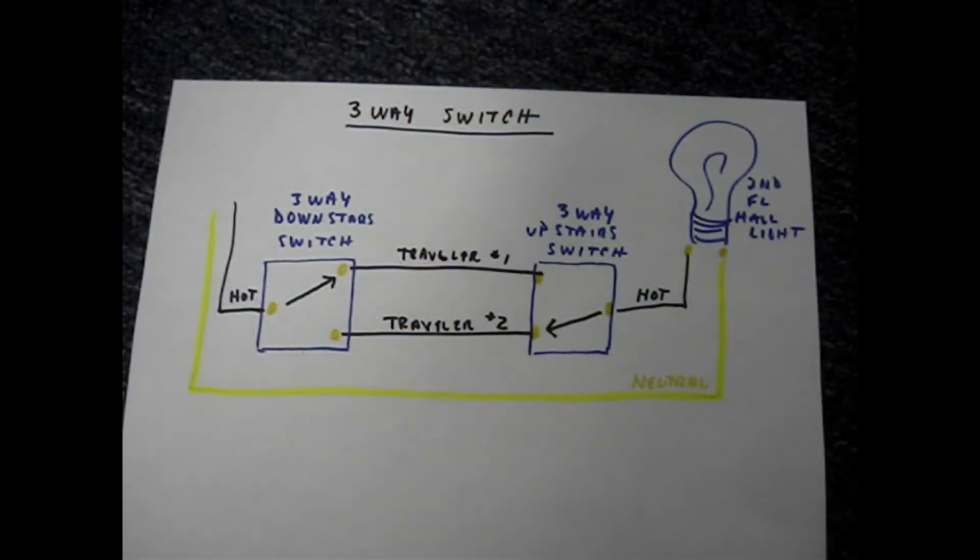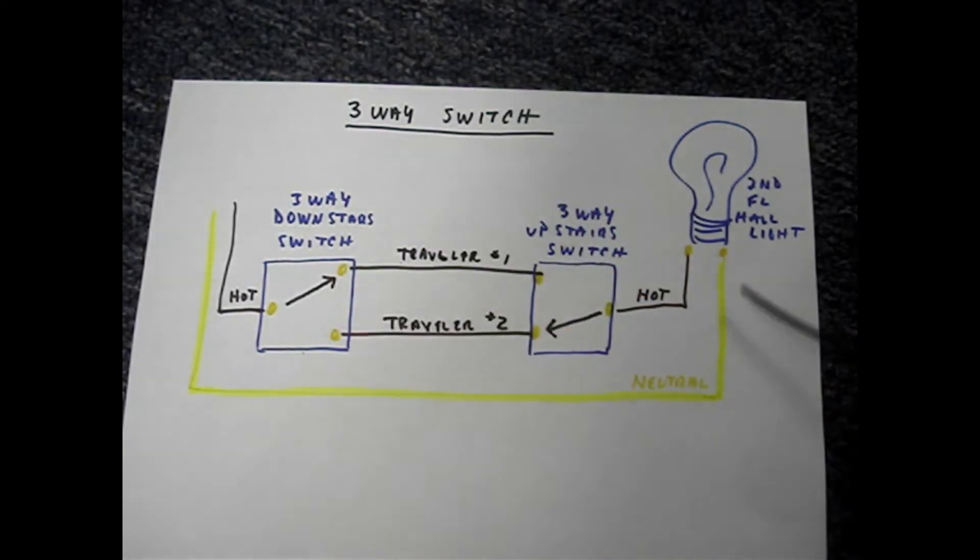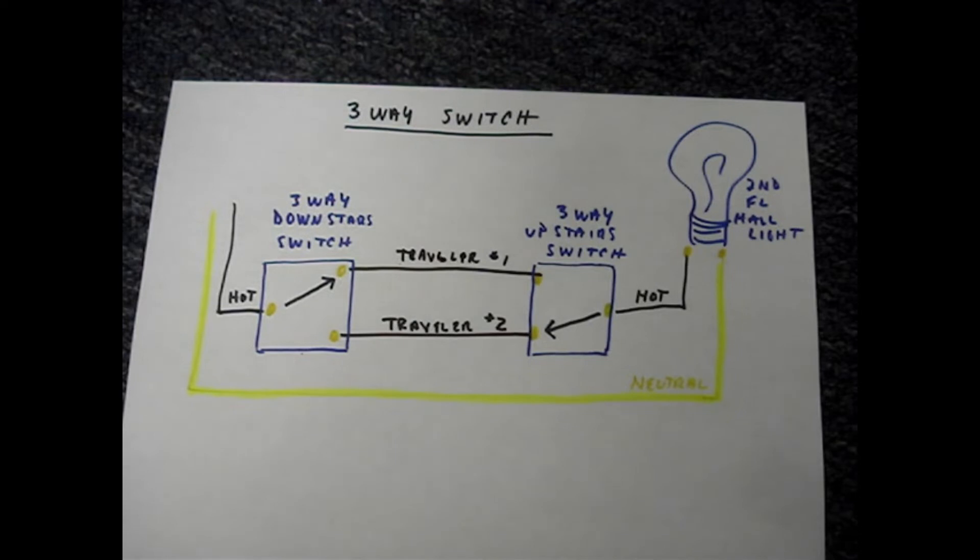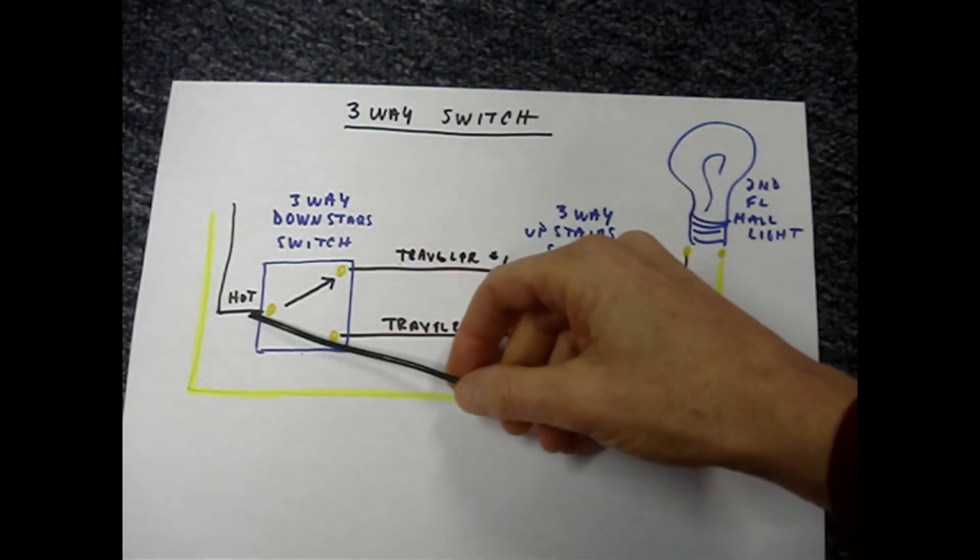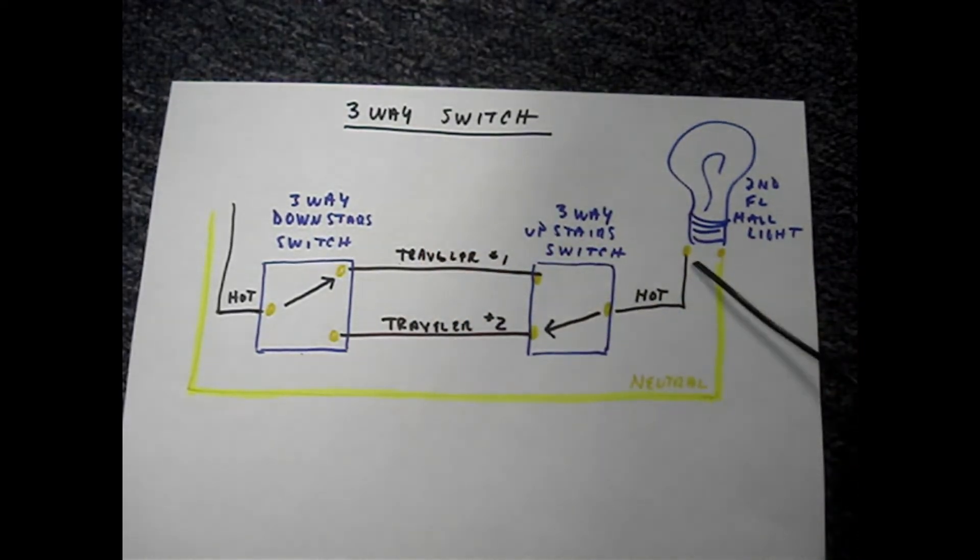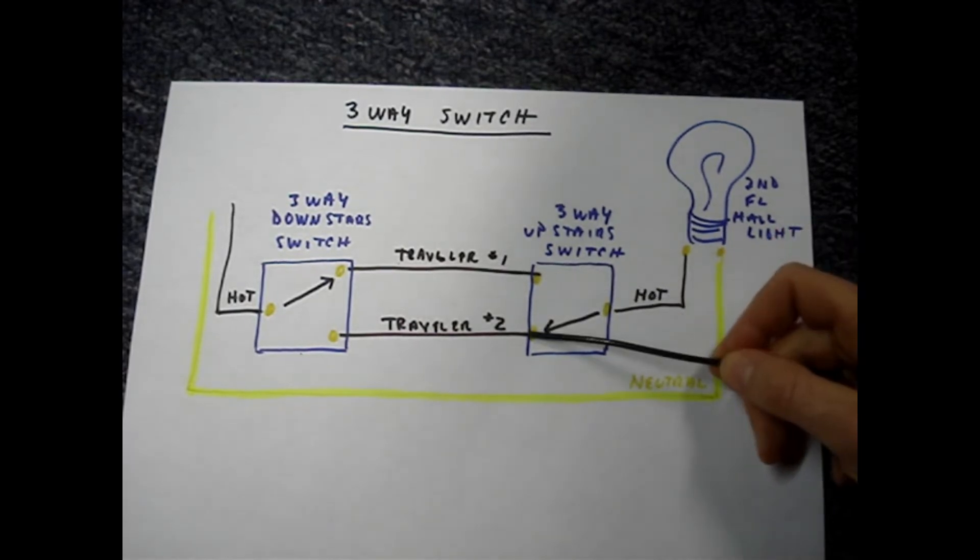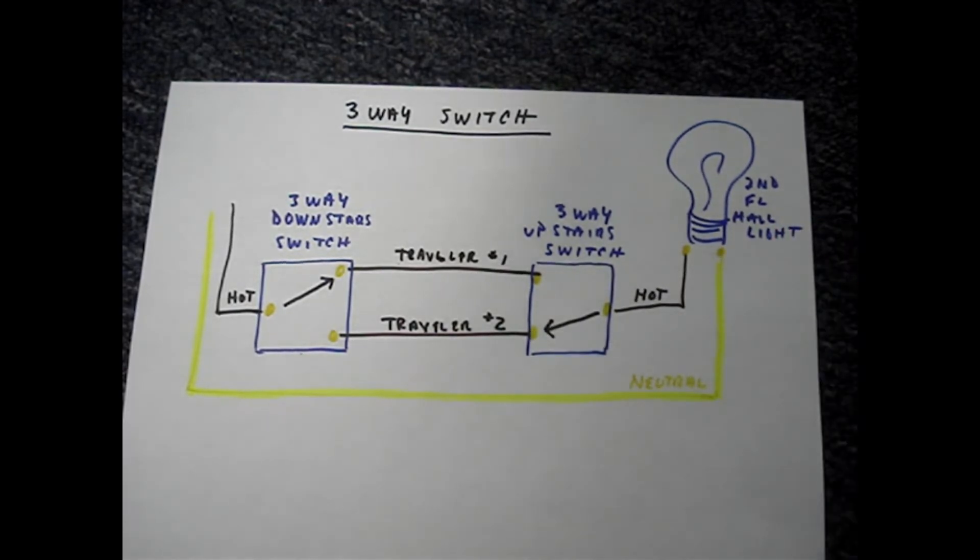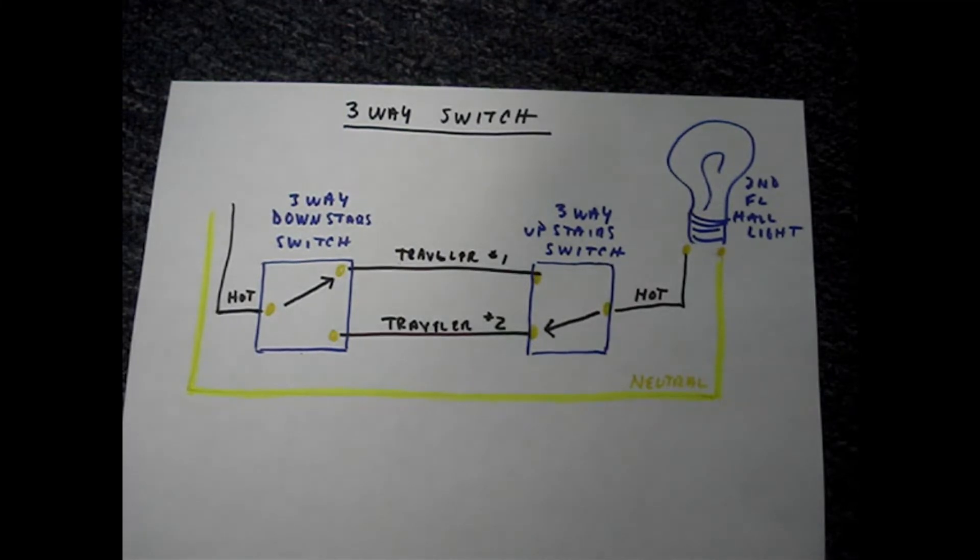The same as a single pole switch, a pair of three-way switches need a neutral wire to complete the circuit and illuminate the light. A pair of three-way switches also switch the hot wire. They need two wires between the switches called travelers so that the downstairs switch and the upstairs switch can turn the light on or off no matter the position of the switches.